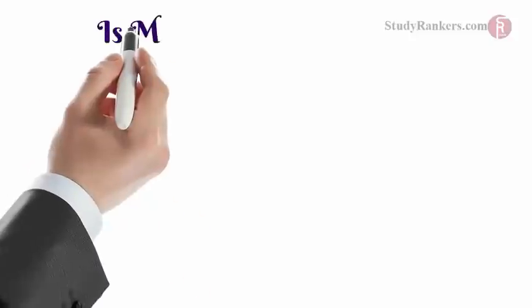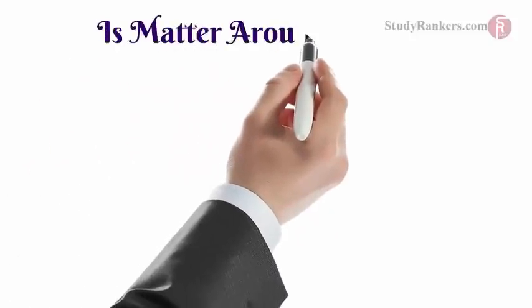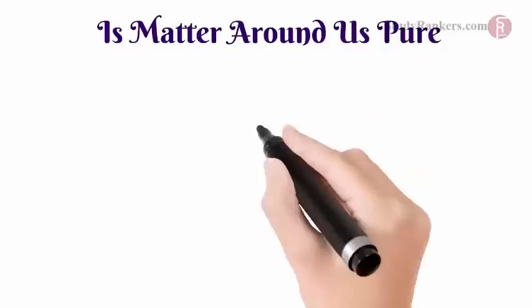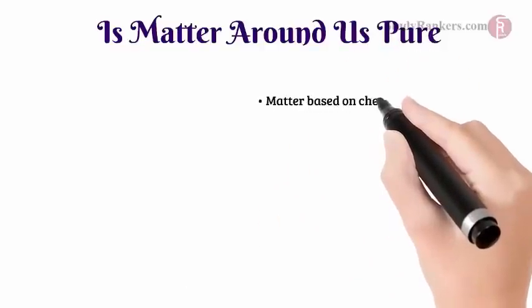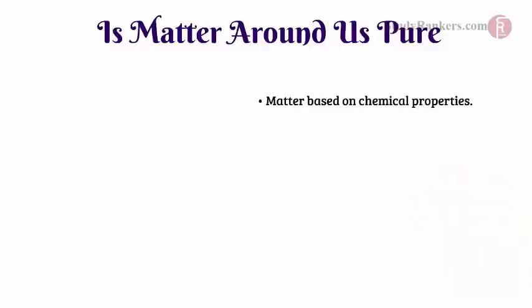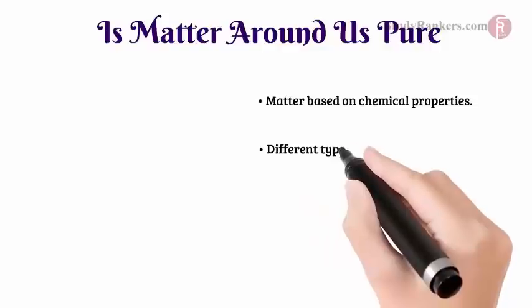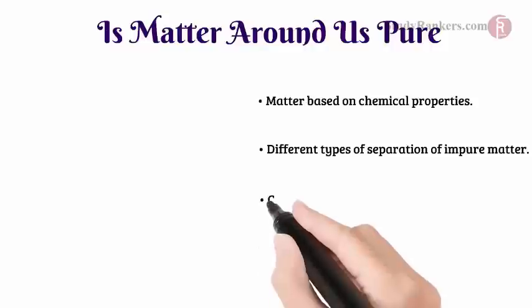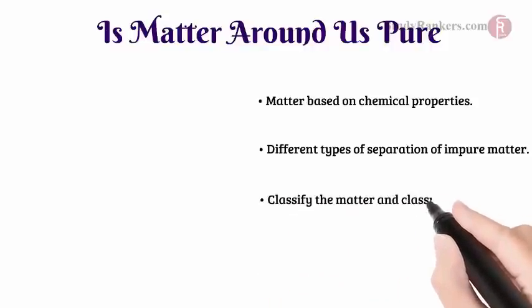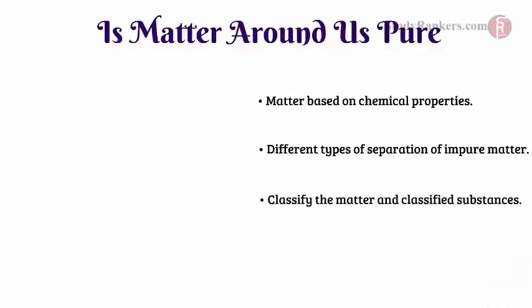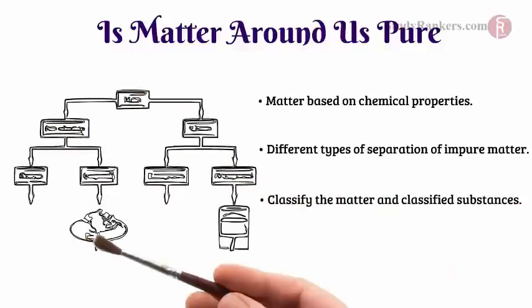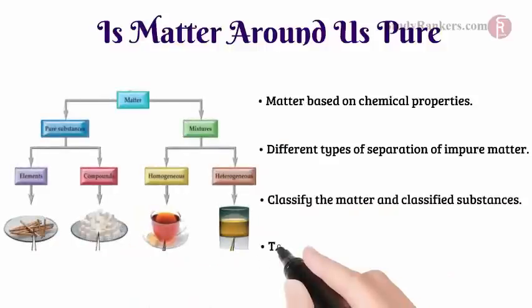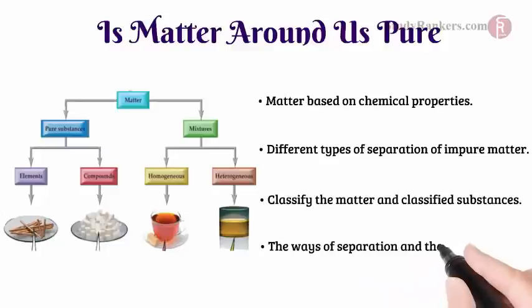Hello there. We have already studied about the classification of matter based on physical properties in our previous video. Now we are going to classify the matter based on chemical properties and also study about the different types of separation of impure matter. First we will classify the matter, then we will know in detail about those classified substances, and lastly we will know about the ways of separation and their applications. Let's start with the classification based on chemical properties.